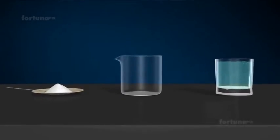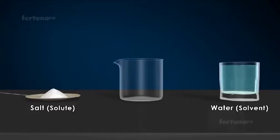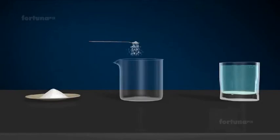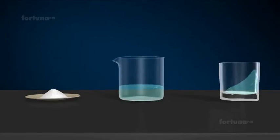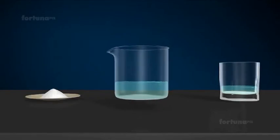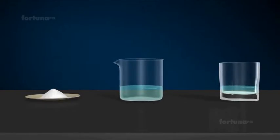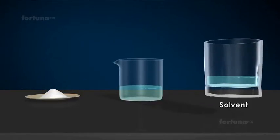The homogenous mixture of two substances, one solute and another solvent, is known as solution. The substance being dissolved is known as the solute and the substance which dissolves it to form a solution is the solvent.